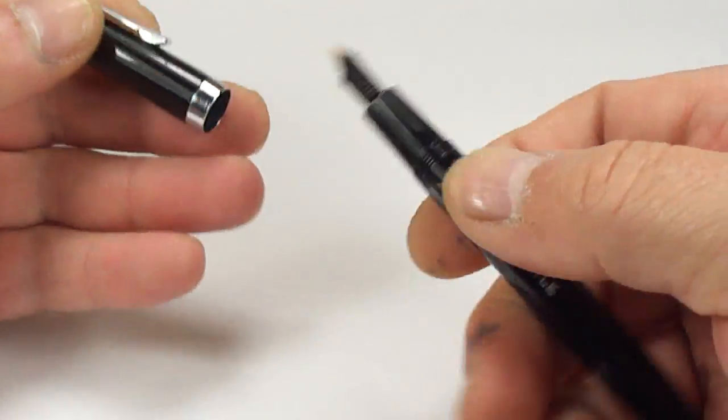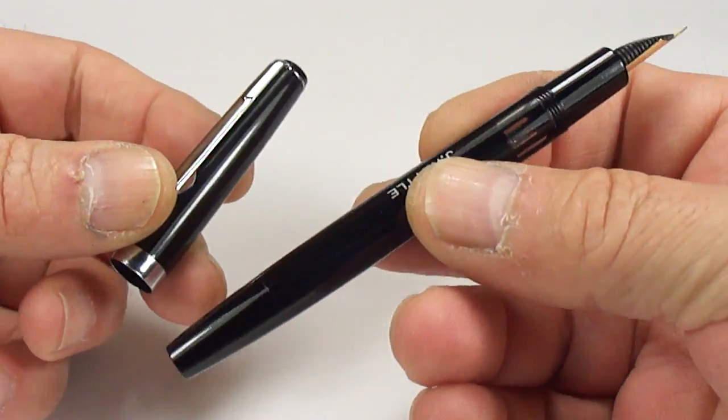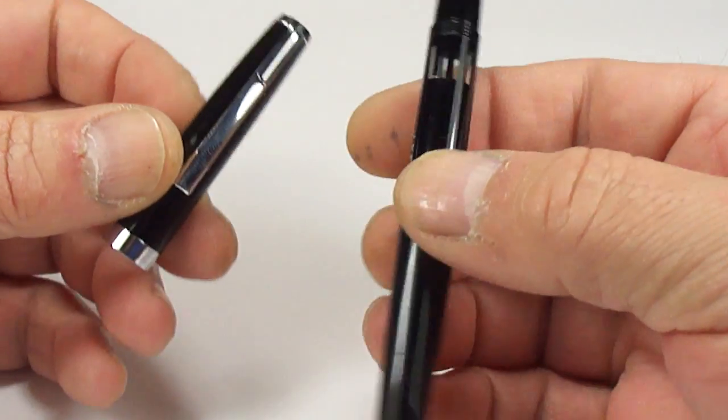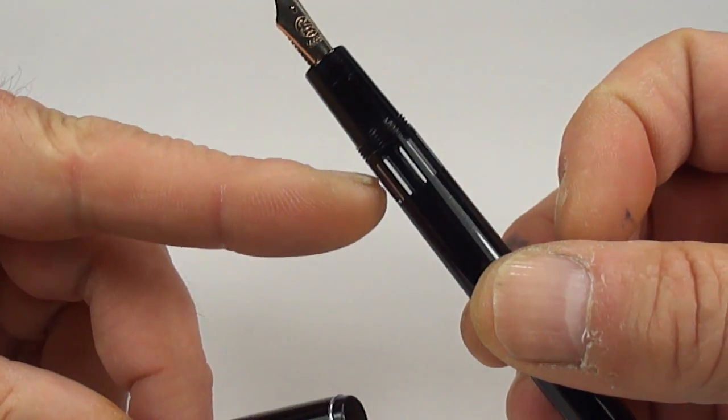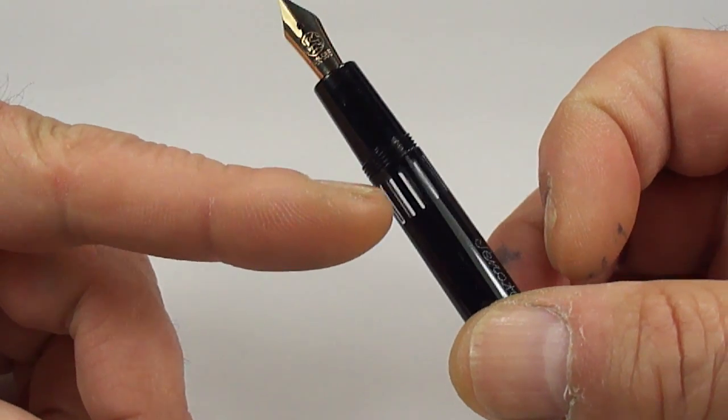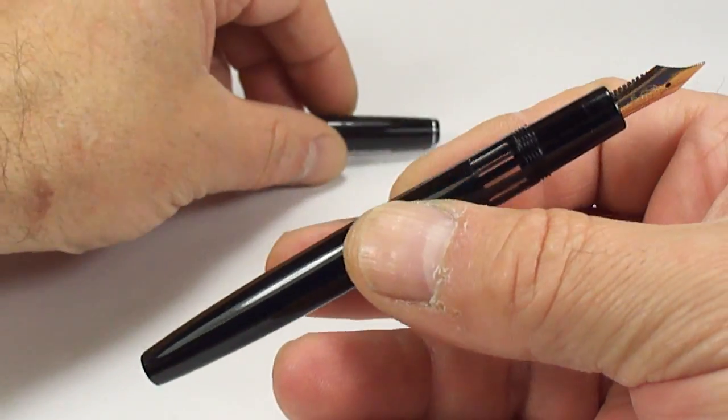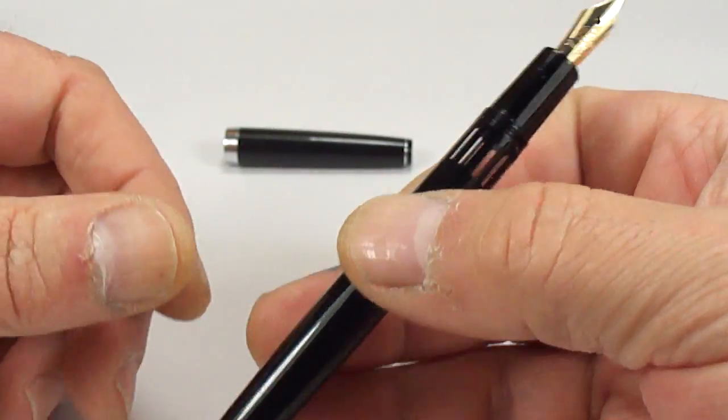Let's unscrew the cap, show you the pen at different angles. Now, in a moment, I'll show you. This one is actually a piston fountain pen, and you can see it's got this lovely clear ink view window to the top of the barrel there. Very similar to some of the Pelican pens.